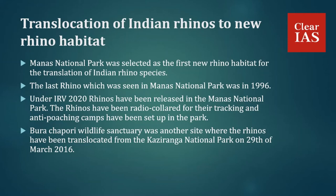Manas National Park was selected as the first new rhino habitat for translocation. Rhinos were once common in this park, but violent civil conflicts beginning in 1989 caused damage to park infrastructure, anti-poaching camps, and roads. The last rhino seen in Manas was in 1996. Under IRV 2020, rhinos have been released there, fitted with radio collars for tracking, and anti-poaching camps have been set up. However, poaching remains a threat, and translocation of new rhinos to the park has been put on a moratorium.